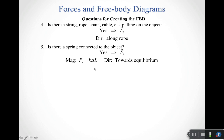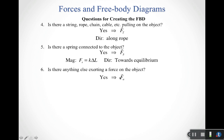The next question: is there a spring connected to the object? If yes, we have an elastic spring force. The magnitude is calculated using the spring constant k times Δl, where Δl is how much you're stretching or compressing the spring. The direction is always trying to restore the object toward equilibrium. The last question: is there anything else exerting a force on the object? If so, we include an applied force. Its magnitude and direction are typically given in the problem.